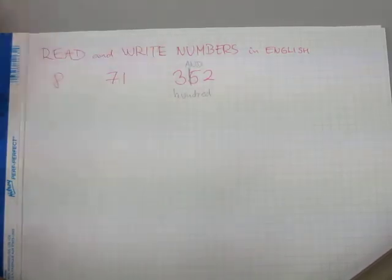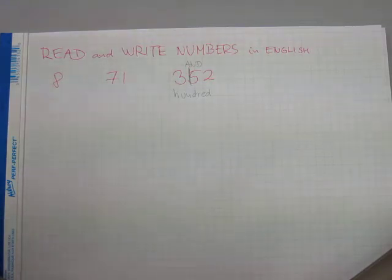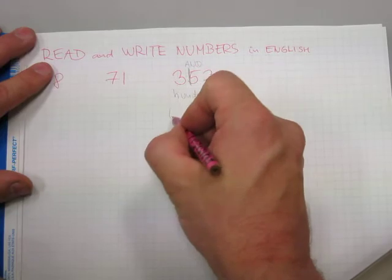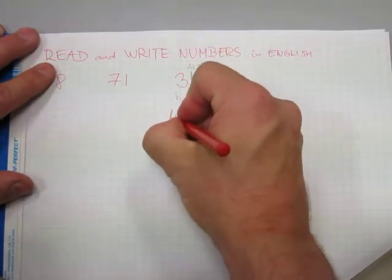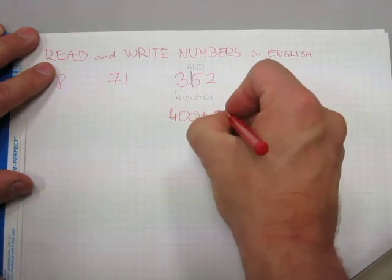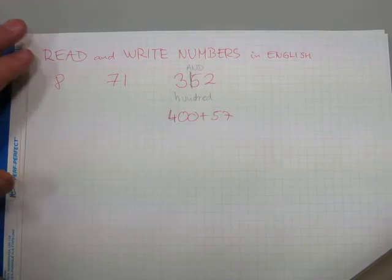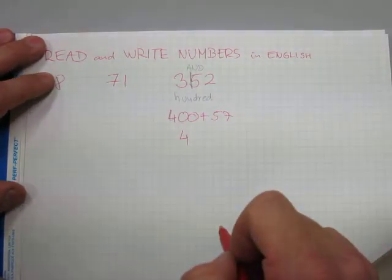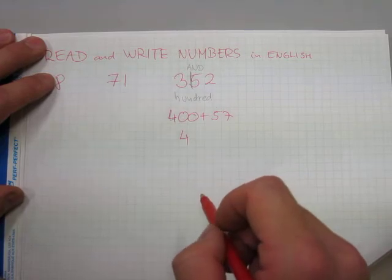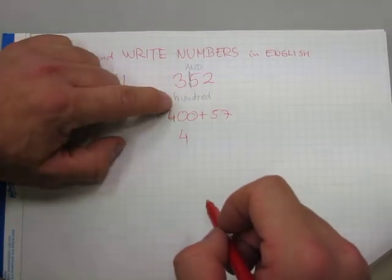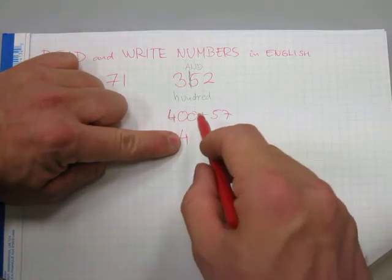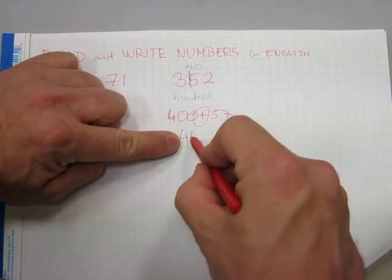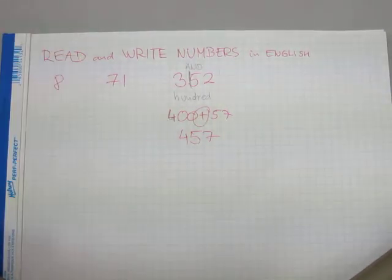We have a couple of extra words that don't get written down. When you hear '457,' you don't write down those spoken words. What you write down is just 4, then 57 — the word 'hundred' doesn't get written down; it's only indicating the place value of the 4. The word AND doesn't get written down as plus either. 457 just gets written up like so.